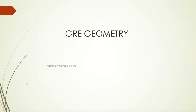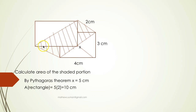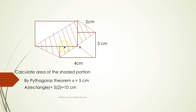This video discusses geometry problems in GRE. Given a cuboid with dimensions 4, 3, and 2 centimeters respectively, we need to find the area of the shaded portion.